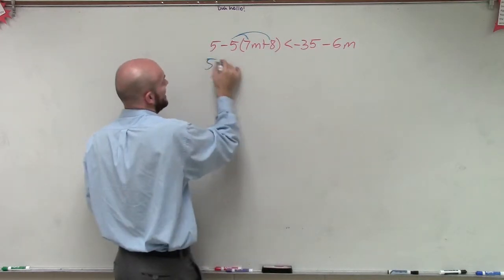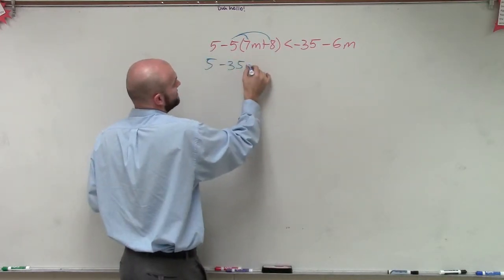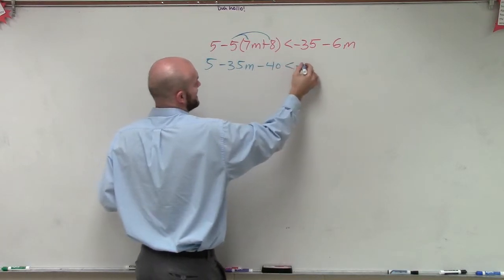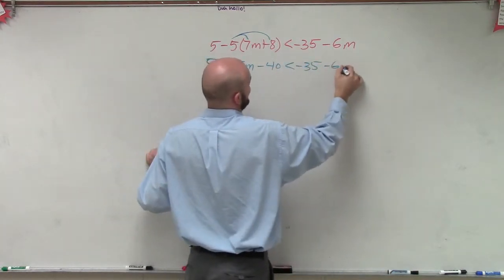Done nothing over here. So I have 5 minus 35m minus 40 is less than negative 35 minus 6m.